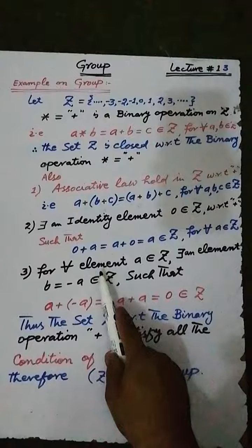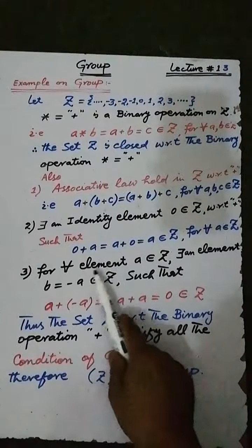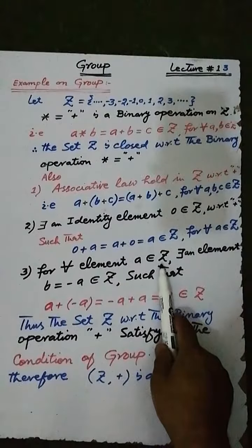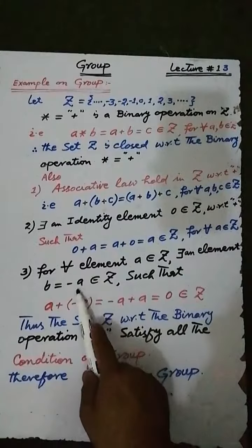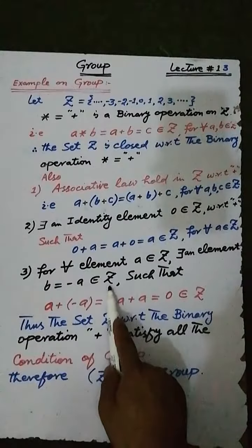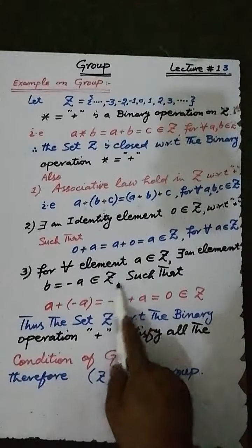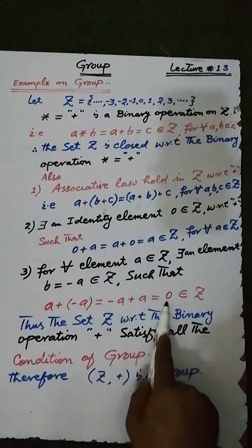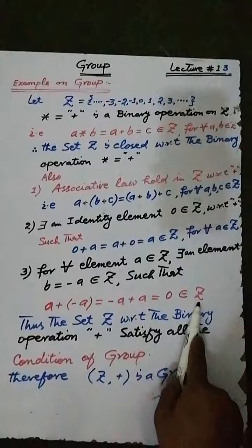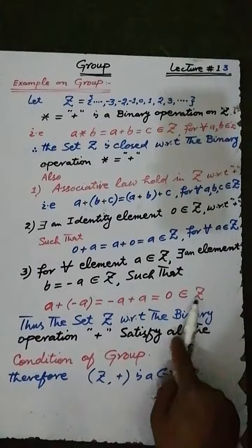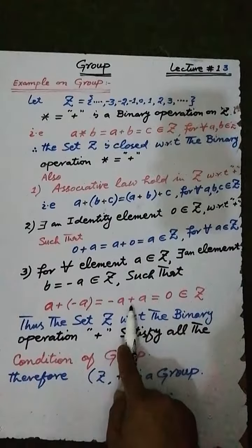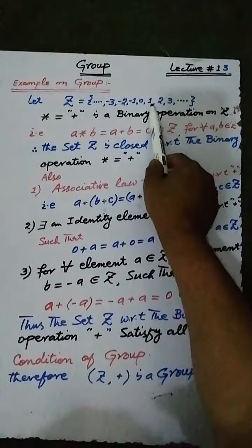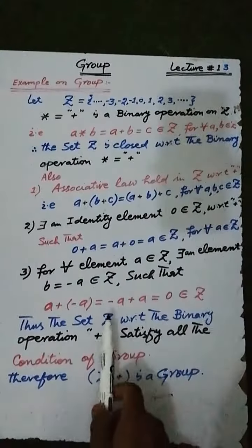To satisfy the fourth condition: for each element a belonging to the set z of all integers, there exists an element minus a belonging to z, such that a plus (minus a) is equal to (minus a) plus a is equal to 0, where 0 is the identity element of the set z with respect to the binary operation addition.